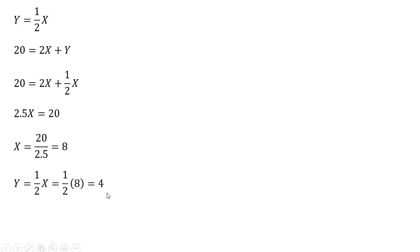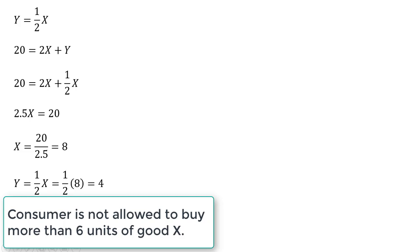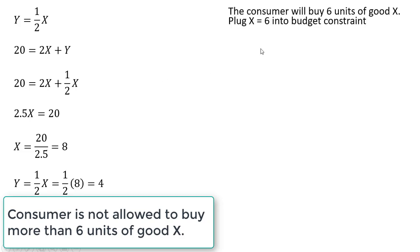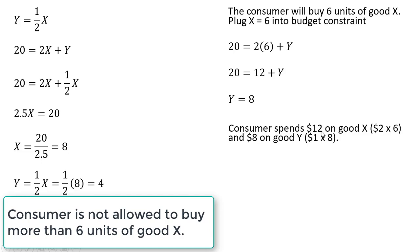However, we have a problem — the rationing constraint is binding. The consumer is not allowed to buy more than 6 units of Good X, but we have a value of 8, so the rationing constraint is binding. In that case, the consumer will only be able to buy 6 units of Good X. Plugging 6 into the budget constraint gives us 8 units of Good Y. So the consumer spends $12 on Good X (6 units at $2 each) and $8 on Good Y (8 units at $1 each), exhausting the full $20 of income.